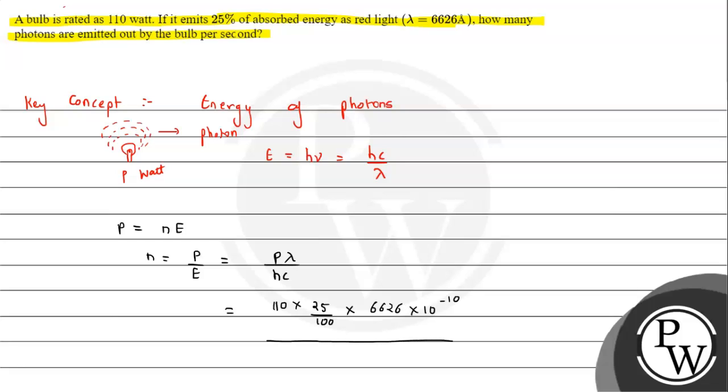h is Planck's constant, 6.63 × 10^-34 joule-seconds, and c is the speed of light, 3 × 10^8 meters per second.